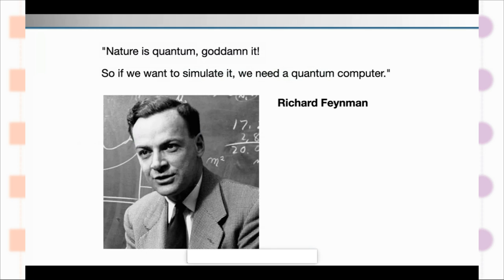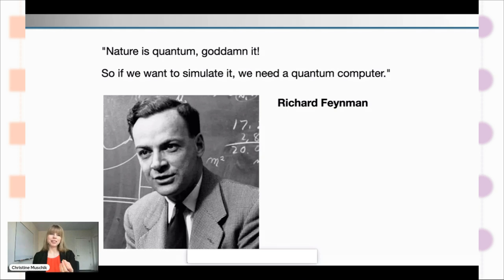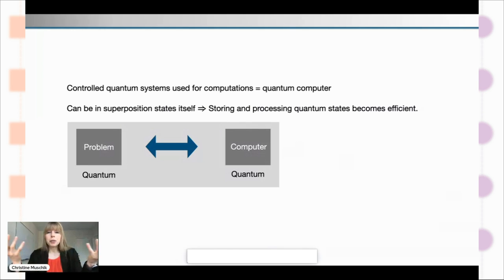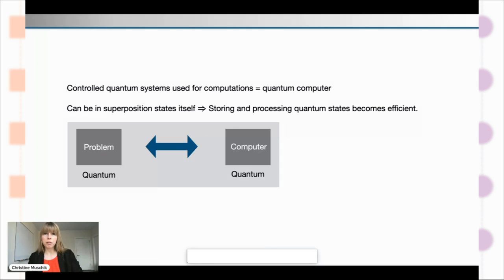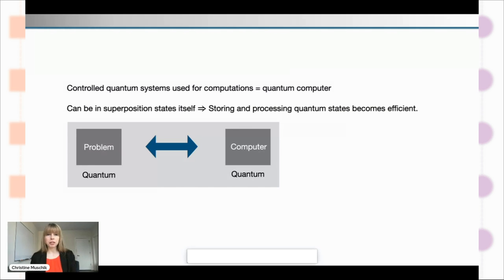And so that's the trouble. But it's also an excellent opportunity to bring on one of my favorite quotes — by Richard Feynman, who said bluntly: nature is quantum, goddammit. So if we want to simulate it, we need a quantum computer. Using a controlled quantum system for computation means this system can be in superposition states itself, making storage and processing of quantum states efficient.